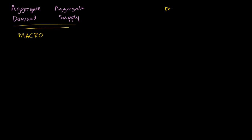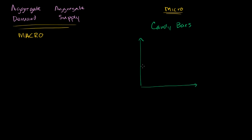To make that comparison, let's revisit the microeconomics ideas of supply and demand by focusing on just a particular market — the market for candy bars. On the vertical axis, we would plot the price per unit of the candy bar, and on the horizontal axis, you would have the quantity bought or sold in a given amount of time. We saw that the demand curve tended to be downward sloping.